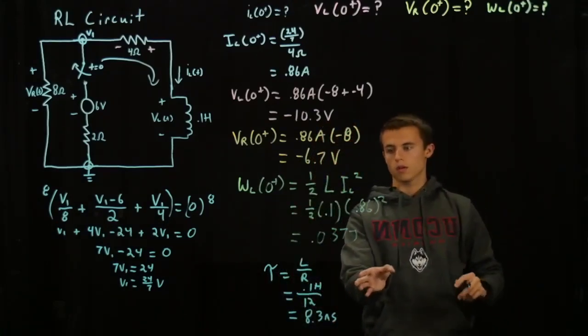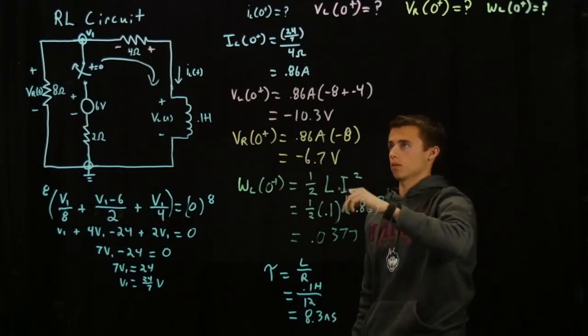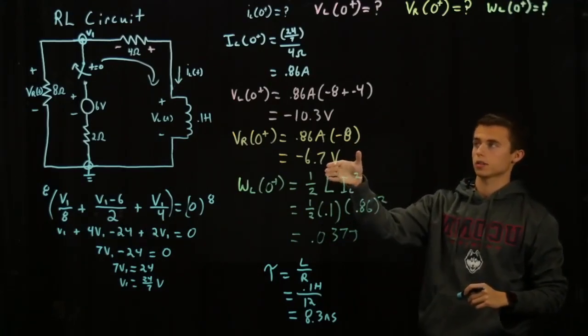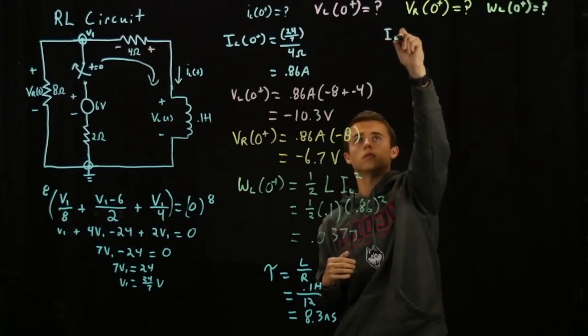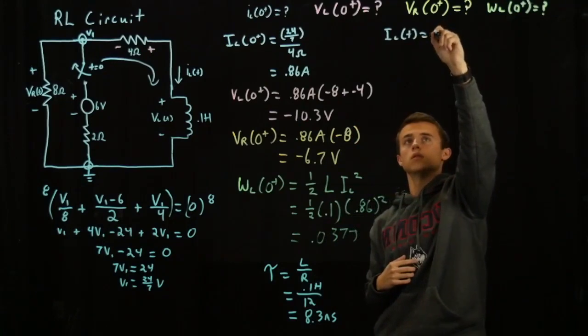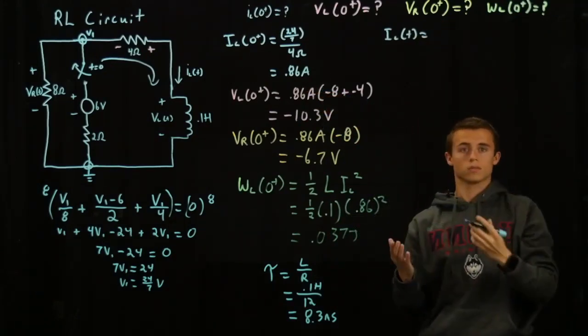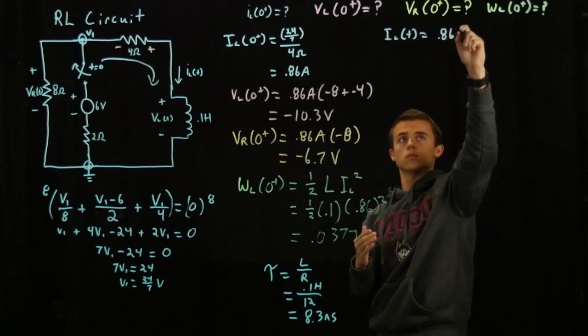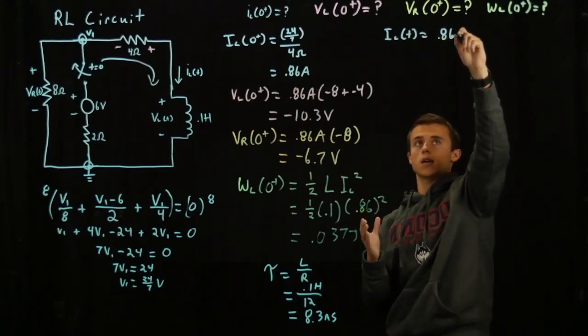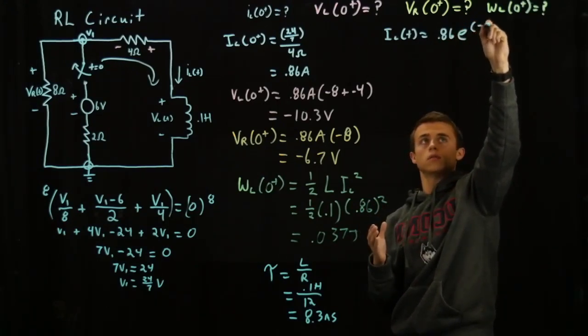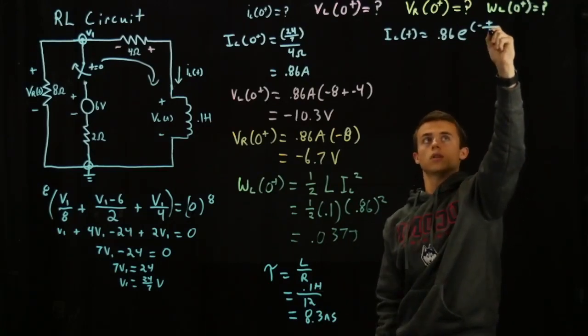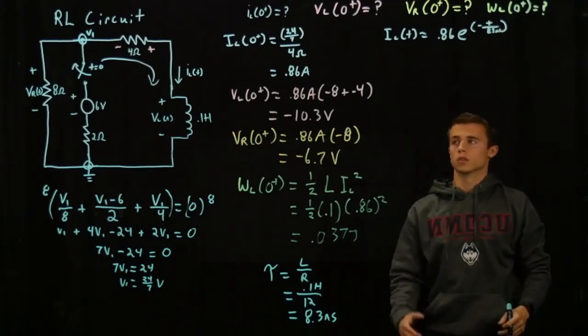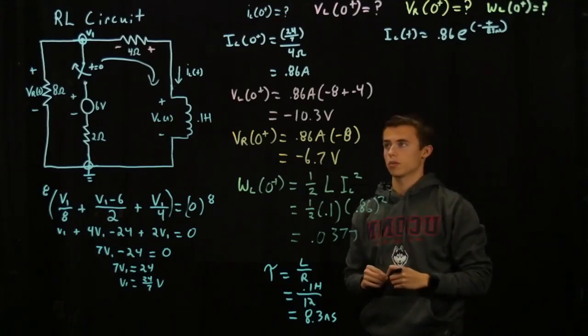This is going to come into play for the following equations to calculate the time decay for the above values. So the time decay for the current going through the inductor will equal I_L of T equal the initial current through the inductor at 0 plus, 0.86 amps times the exponential decay of negative T over tau which is 8.3 milliseconds.